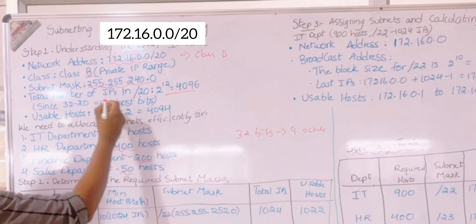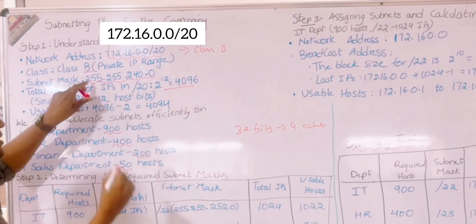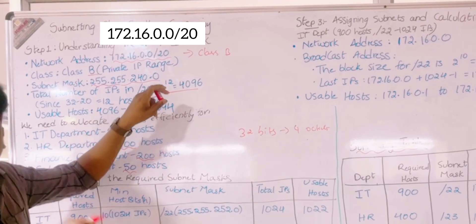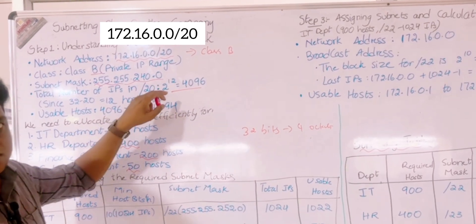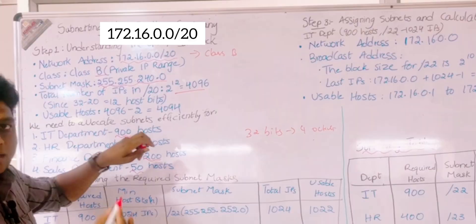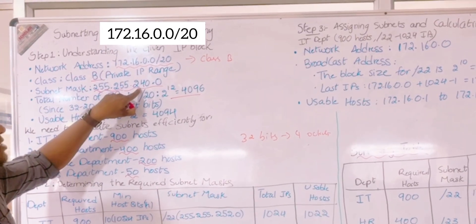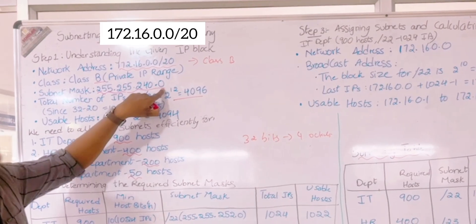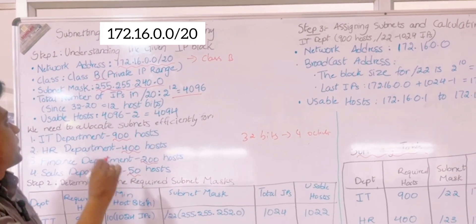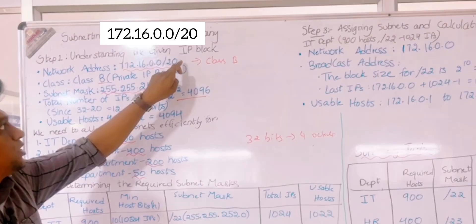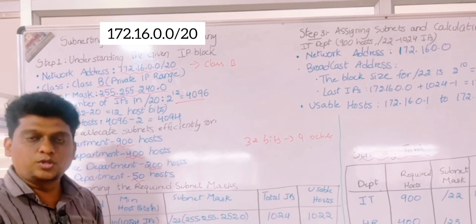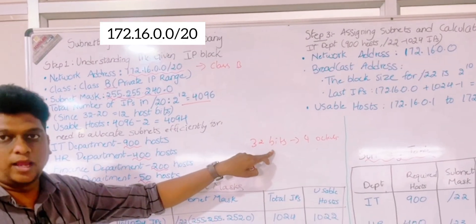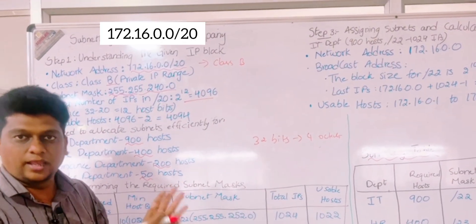The first 8 bits convert to 255, the second 8 bits also convert to 255. In the next 8 bits, only the first 2 are 1s and the remaining 6 are 0s, so that binary converts to decimal as 240. The final octet is all 0s, so it stays as 0. This is how the subnet mask is identified: /20 means 20 consecutive 1s among the 32 bits.